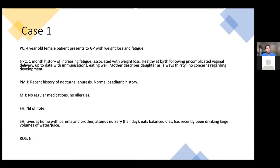So we'll start with a case. You have a four-year-old girl who presents to her GP with weight loss and fatigue. She has a one-month history of increased fatigue associated with weight loss. She was healthy at birth with uncomplicated vaginal delivery, up to date with immunizations, eats well but is always thirsty. No concerns regarding development. She has a recent history of nocturnal enuresis — bedwetting — no medications, no allergies, no family history. She drinks a lot of water and juice.